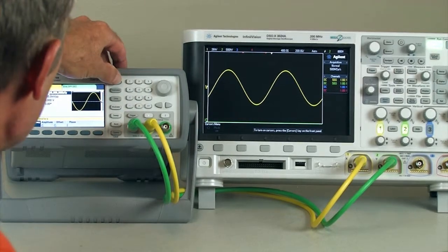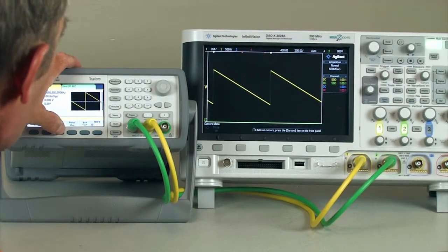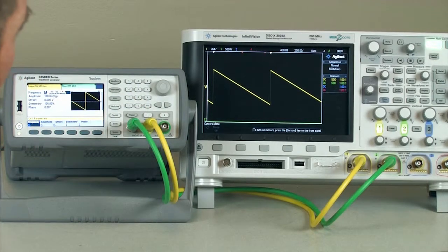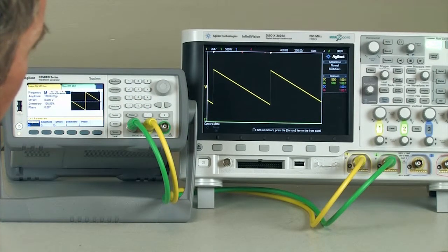I'm going to go ahead and change that to a ramp waveform, and the default is to have 100% symmetry, so we have a negative slope ramp. This is also commonly referred to as a sawtooth waveform.